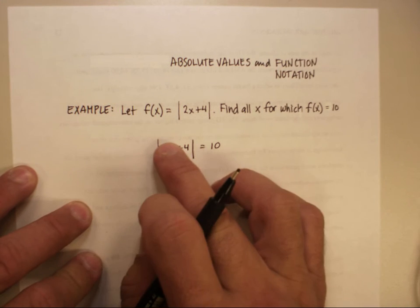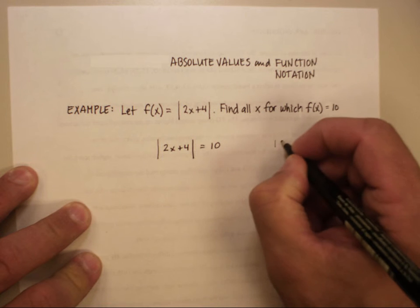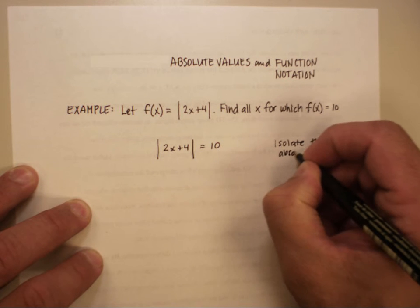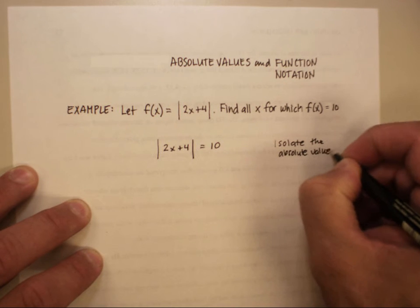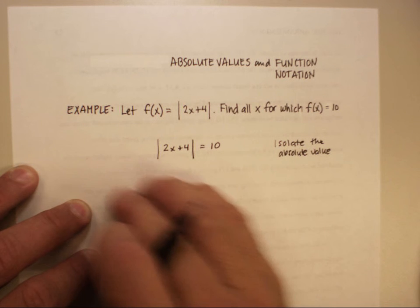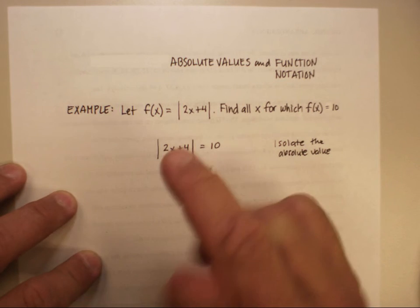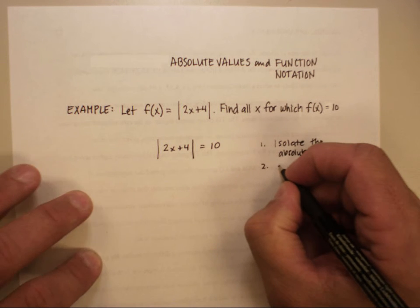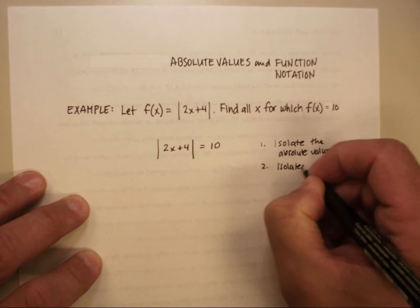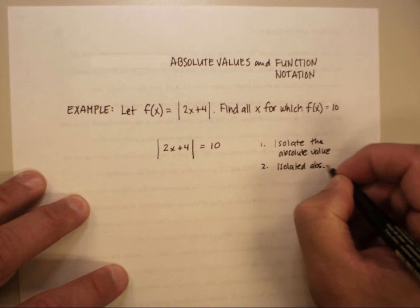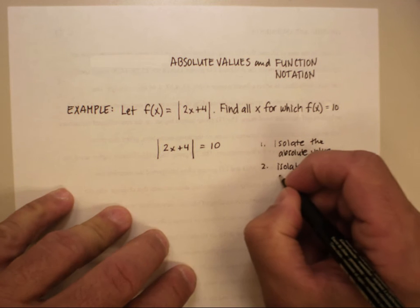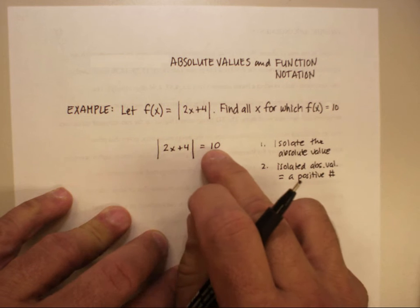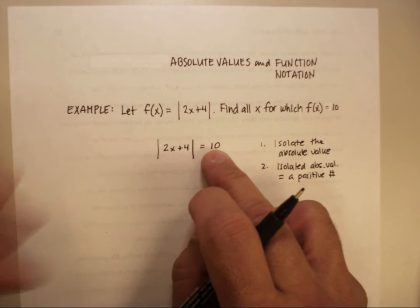You isolate the absolute value, and in this case it's already isolated. Remember to always do that. Isolate the absolute value. And what that means is that there's nothing on the outside or underneath the absolute value itself. And then the second thing is to make sure that it's equal to something positive. So the isolated absolute value equals a positive number. Because remember it can't be a negative. We're just talking about the distance from zero.